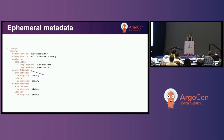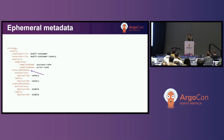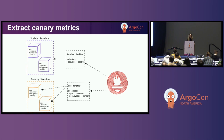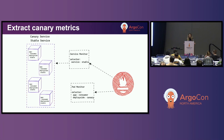An alternative is to use a feature from Rollouts called ephemeral metadata, which lets you define in the spec labels and annotations to attach to canary and stable pods respectively. Of interest to us is the canary metadata, which the Rollout controller adds during the canary. I can then leverage a pod monitor which selects only the pods that are part of the canary deployment based on those labels. The good part with this approach is when the canary gets promoted, the pod monitor will not select any pods anymore, because all pods will have the stable label — the canary label was ephemeral.